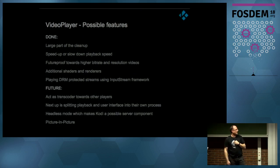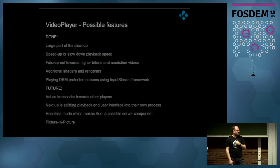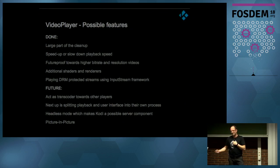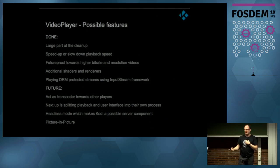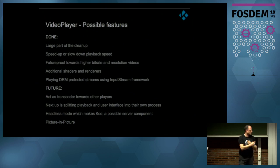A large part of the cleanup is done. We can now speed up or slow down playback speed, it's future-proof towards higher bit rates. Shaders and renderers now allow us to upscale quite efficiently with no memory copy at all. We're playing DRM-protected streams using the input stream framework — Netflix actually now works in Kodi if you can find the plugin. You can install it and have your Netflix library, Amazon Prime, Sky, using the DRM framework. If the hardware supports DRM with Widevine, it just works.